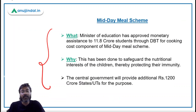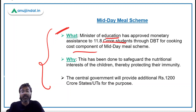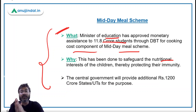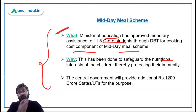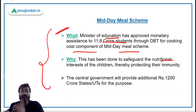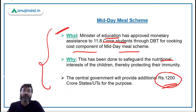The Minister of Education, Dr. Ramesh Pokhriyal Nishank, has approved monetary assistance to 11.8 crore students through Direct Benefit Transfer for the cooking cost component of the Midday Meal Scheme. This has been done to safeguard the nutritional interest of children and protect their immunity, keeping in mind the importance of immunity during COVID-19.